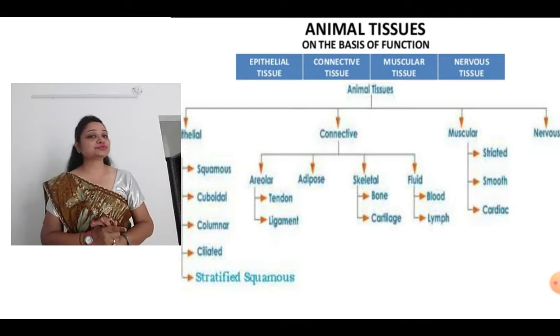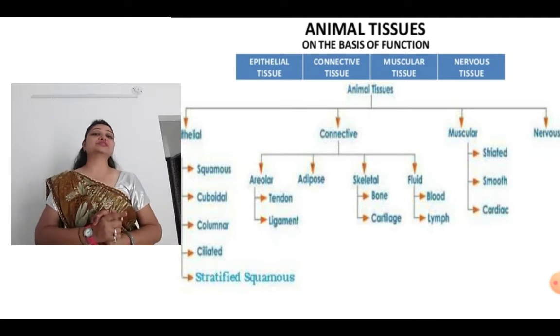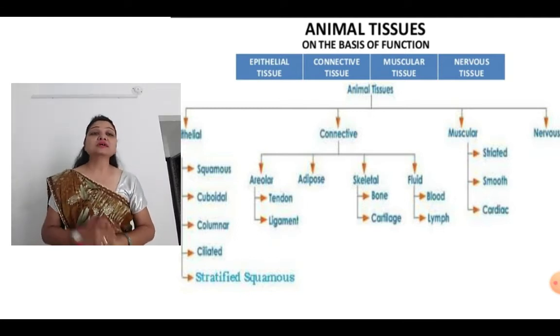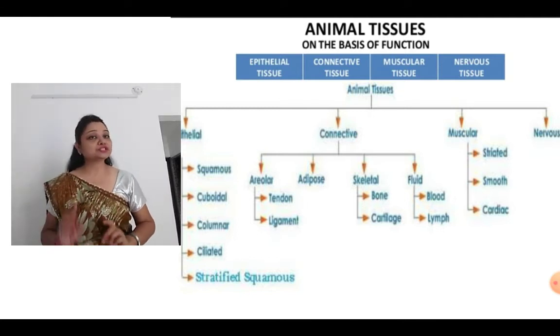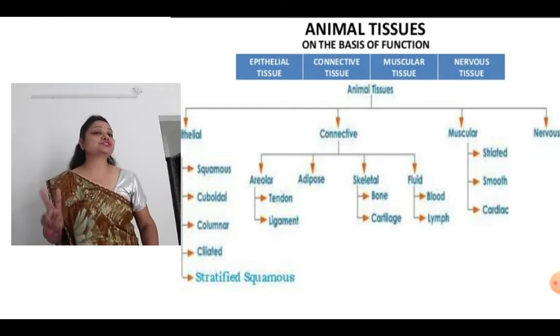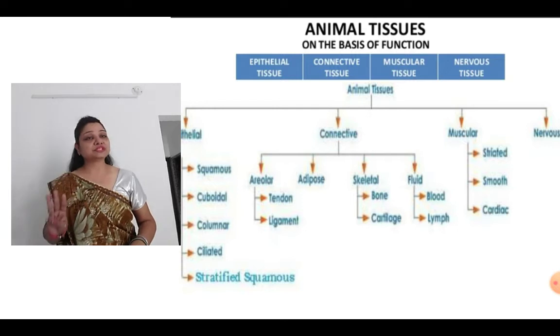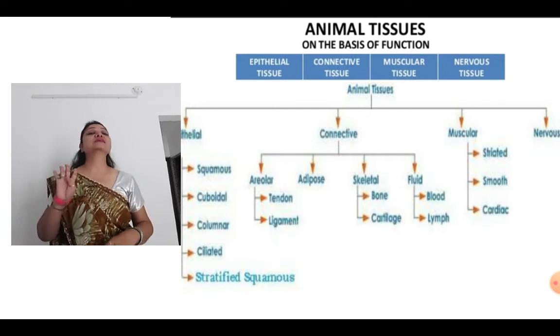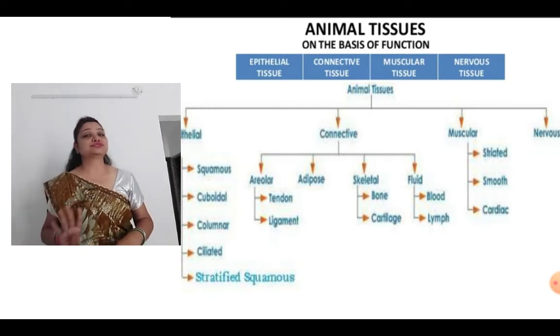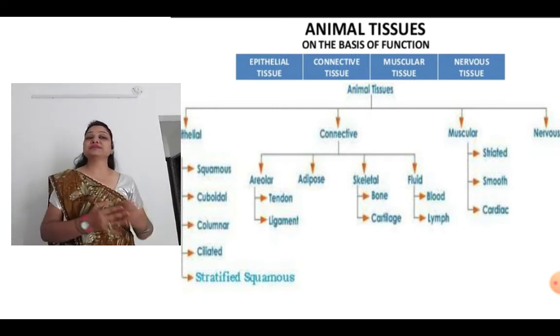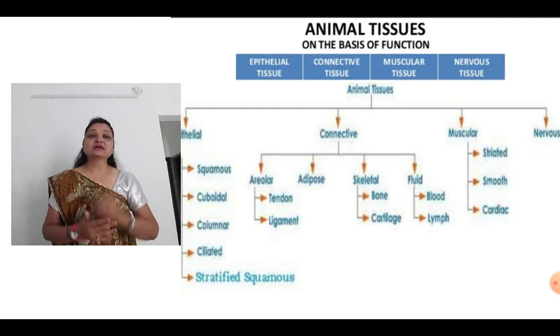Broadly, animal tissues are categorized into four: epithelial tissue, connective tissue, muscular tissue, and nervous tissue. And again there are subcategories for each.